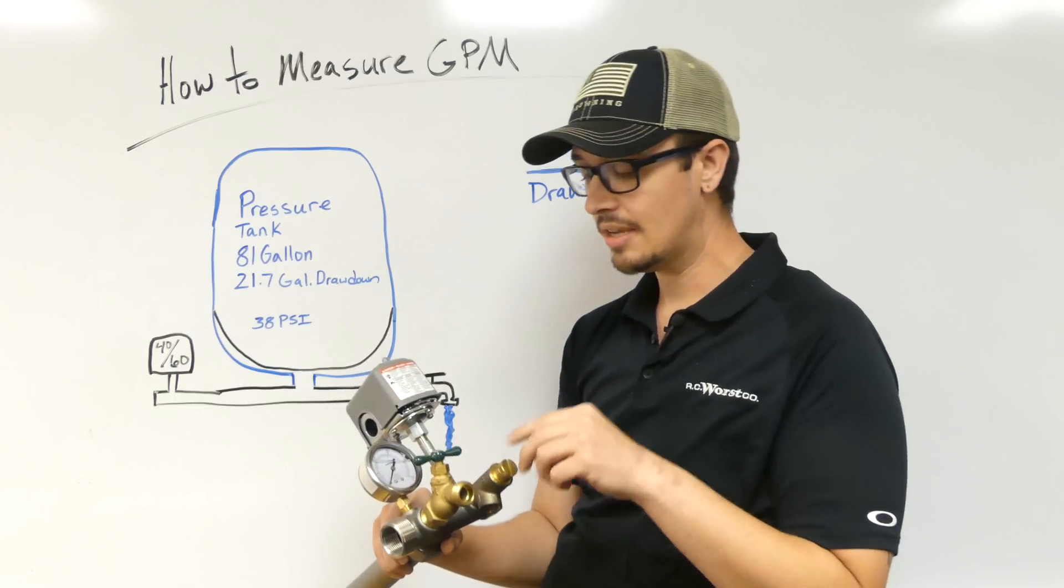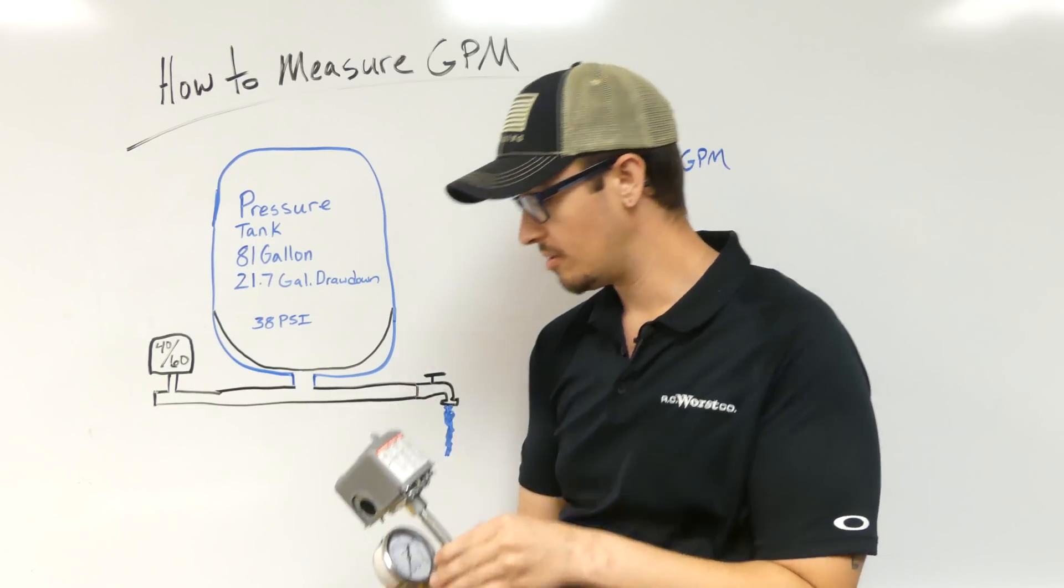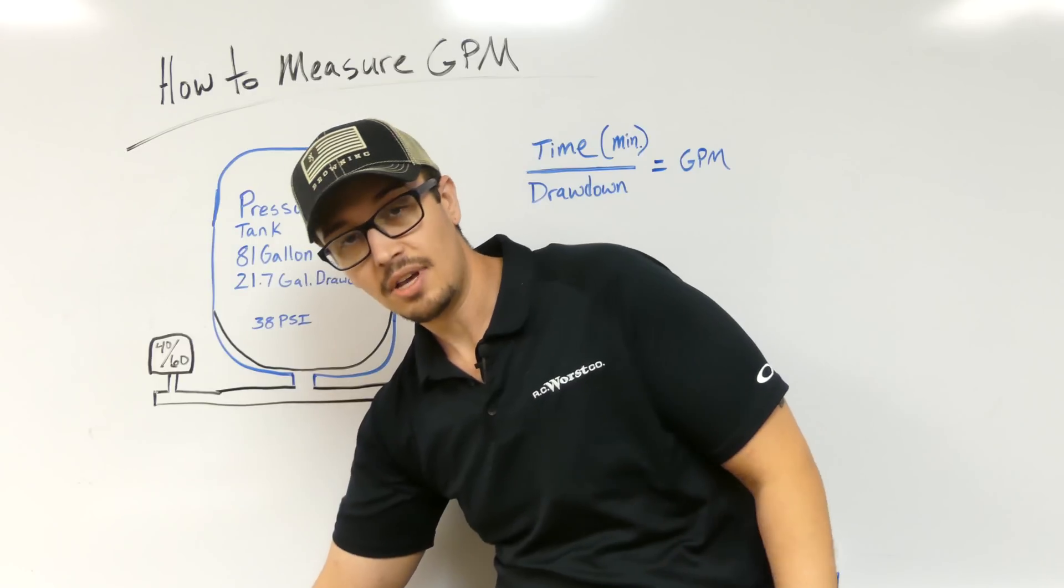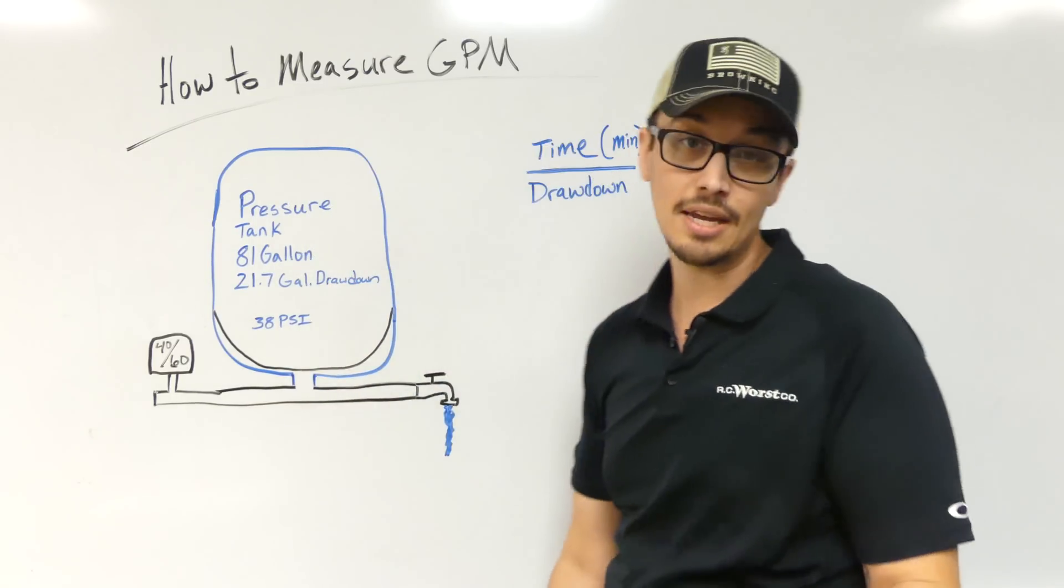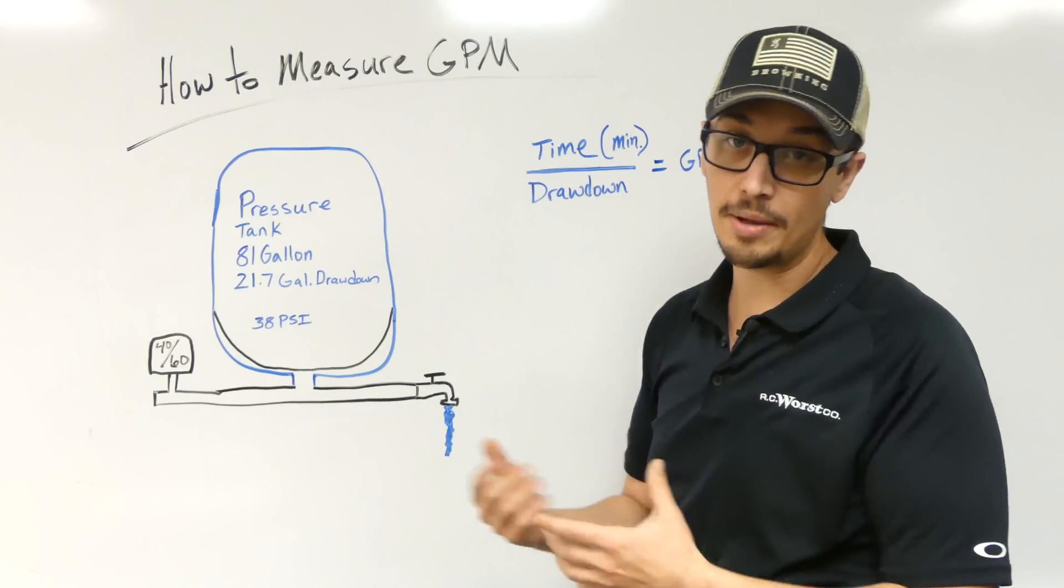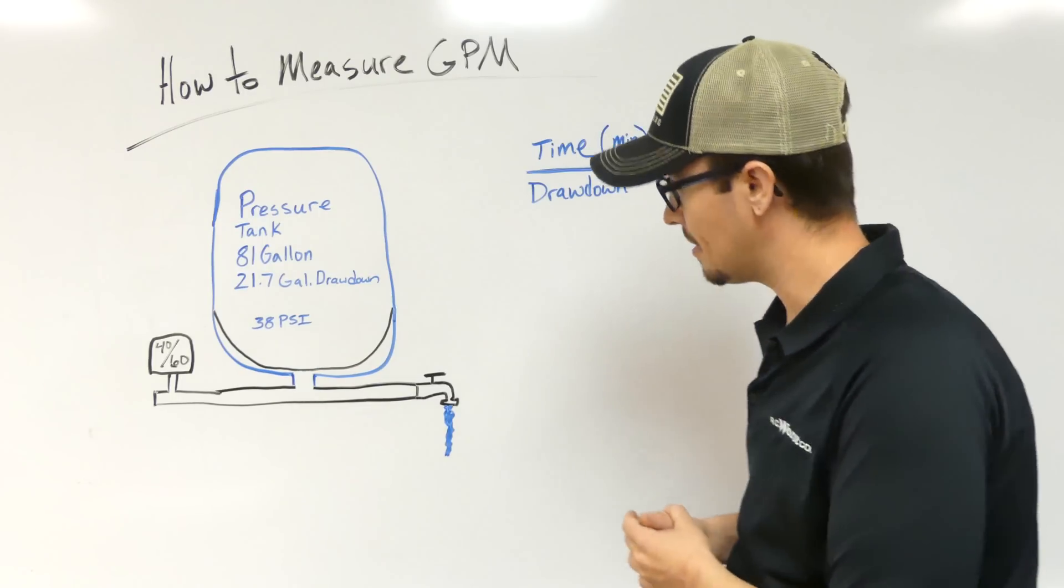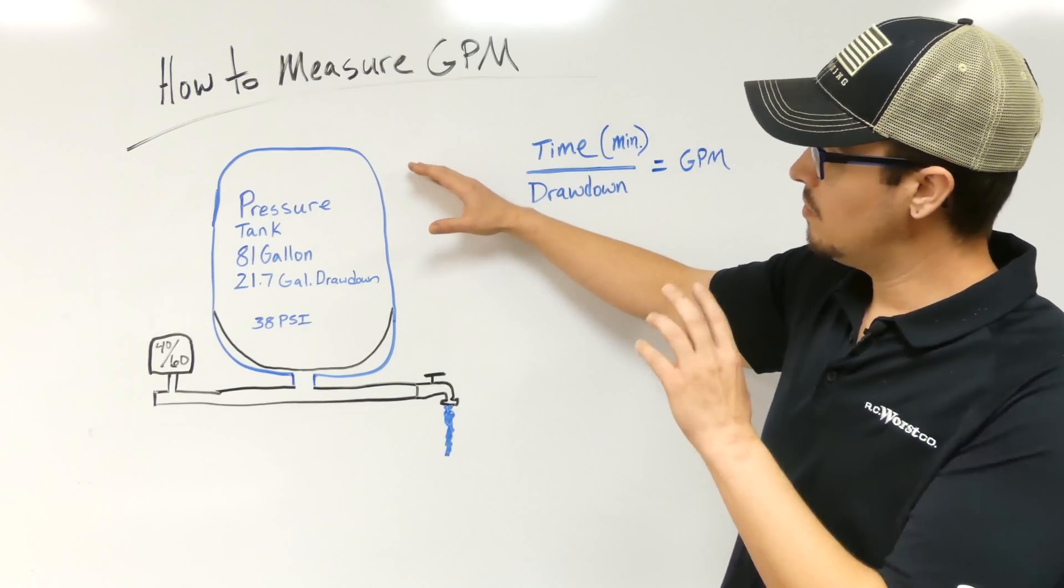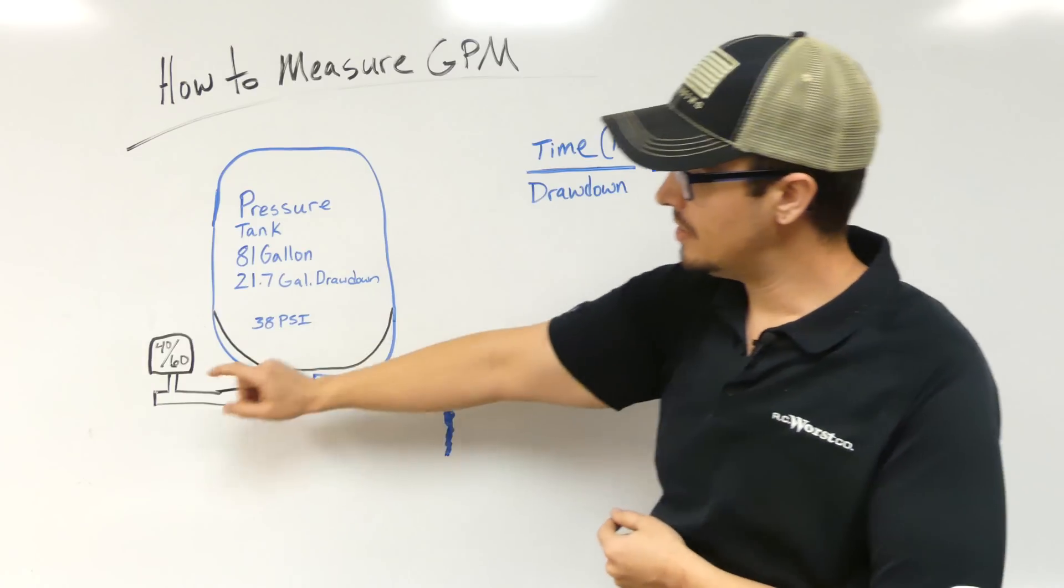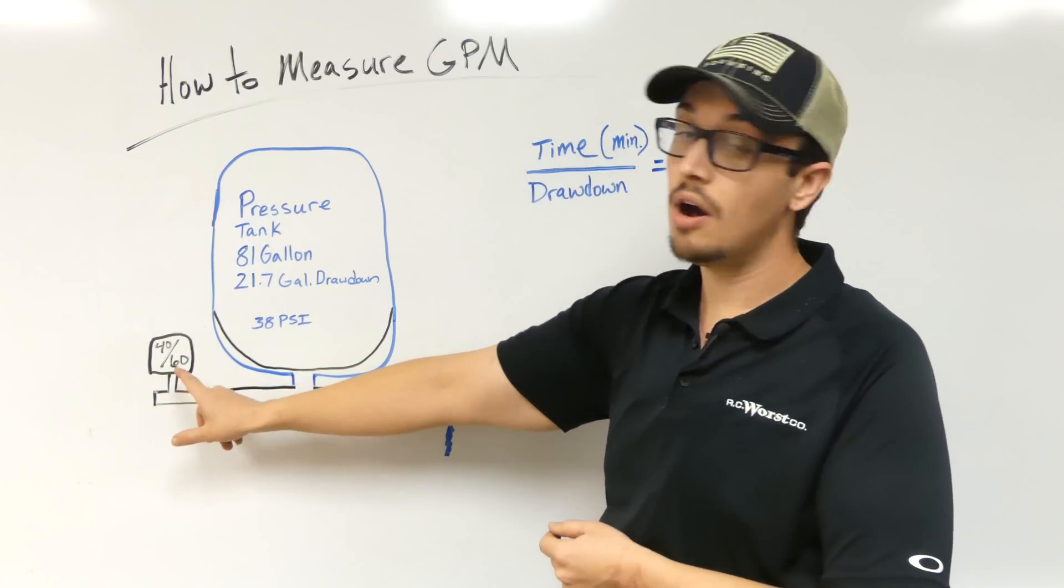You may have some sort of valve, hose bib, or something hopefully really nearby, because the closer you are, the more quickly you can react and the more accurate your measurement's going to be. If you're doing this from outside or something like that, it may take two people to communicate and it may not be as accurate.